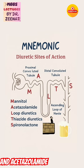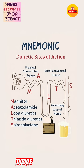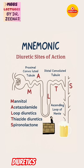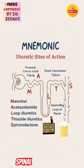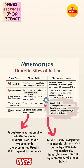Mannitol and acetazolamide act on the proximal convoluted tubule. Loop diuretics act on the loop of Henle. Thiazide diuretics act on the distal convoluted tubule, and spironolactone acts on the collecting ducts.